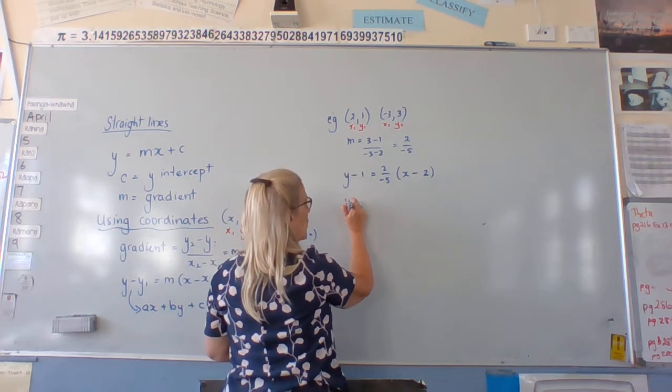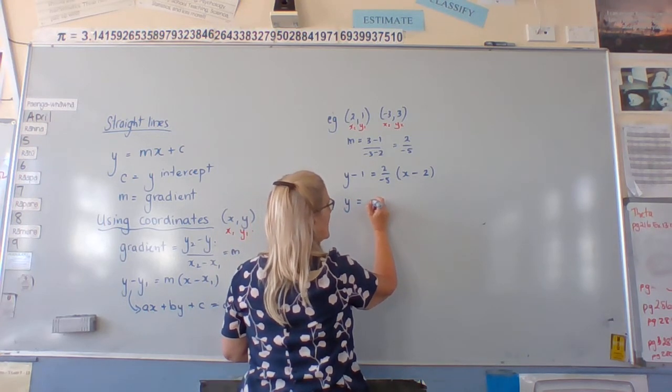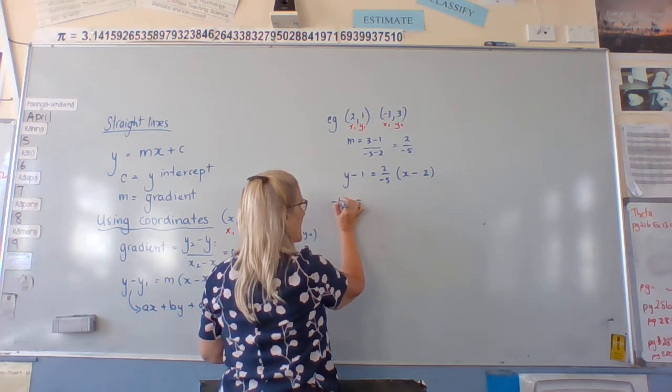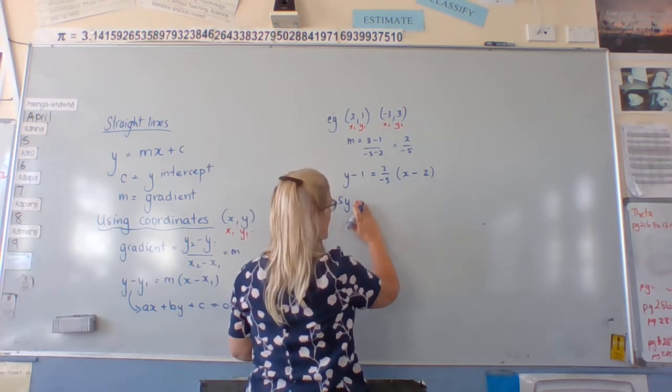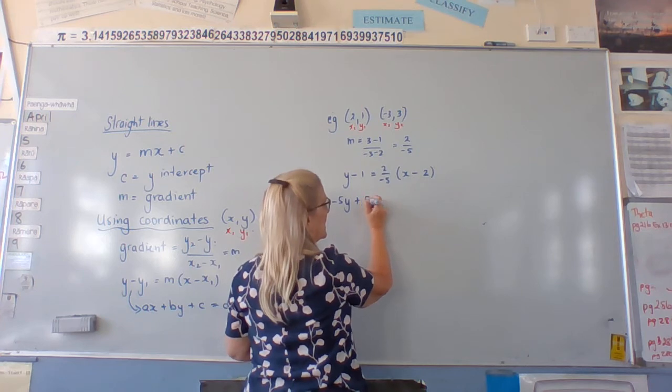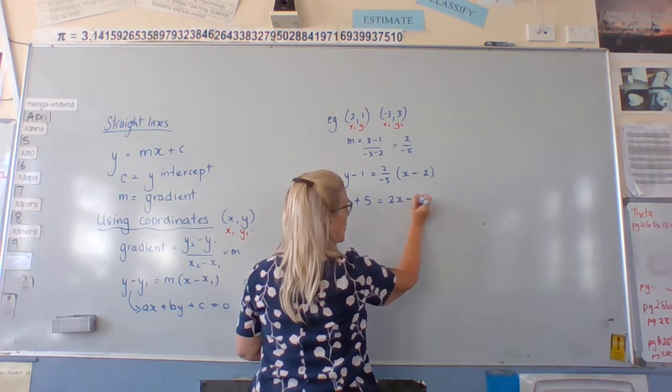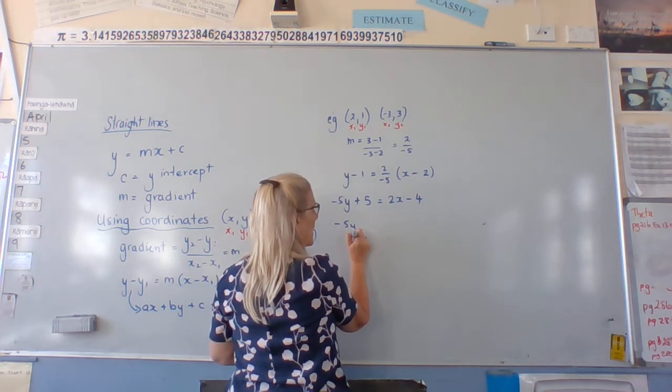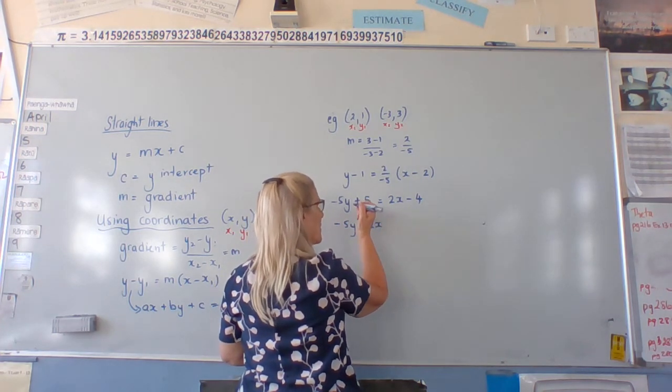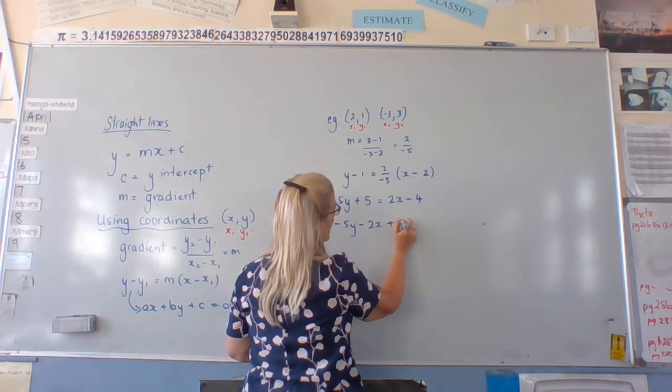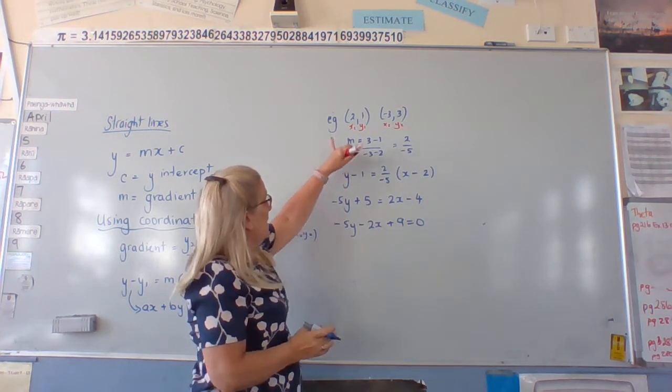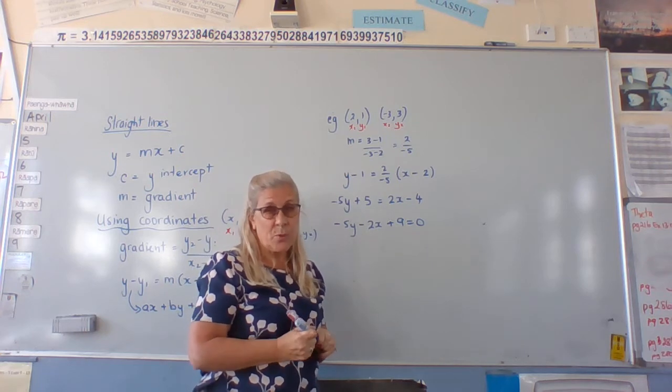Now we rewrite this, y equals, and the easiest way to do it is to actually multiply this by negative 5. So that's plus 5 equals 2x, multiply it out, 4. So we've got negative 5y, we've got negative 2x, we've got 5 plus 4 is 9 equals 0. It's our straight line that joins together those two points.